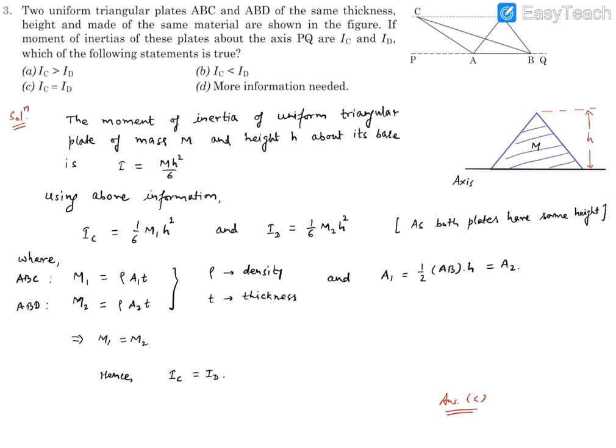There is a fact that says the moment of inertia of a uniform triangular plate of mass M and height H about its base is given by I equals MH square by 6.